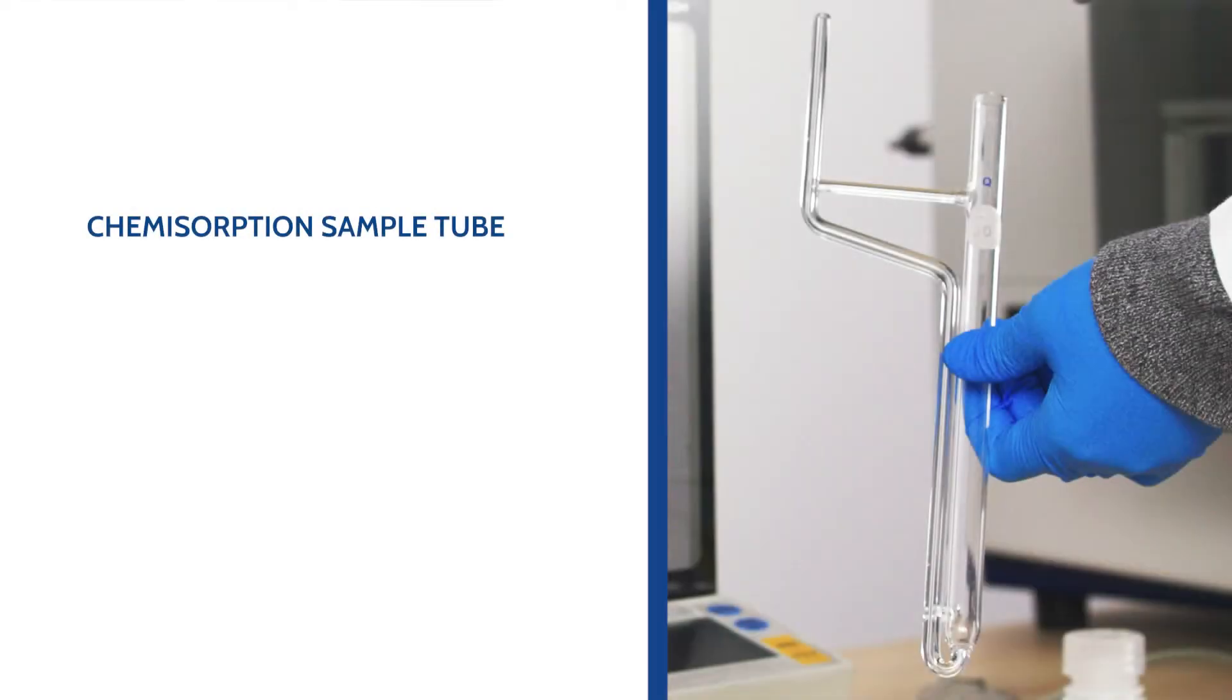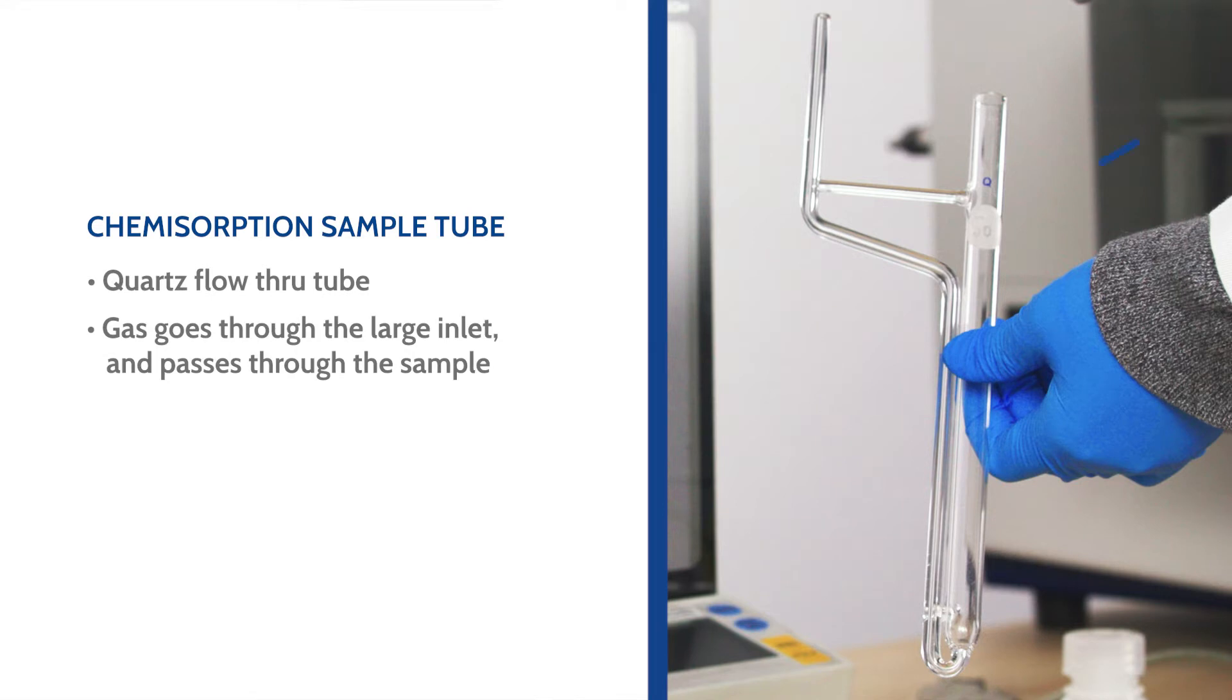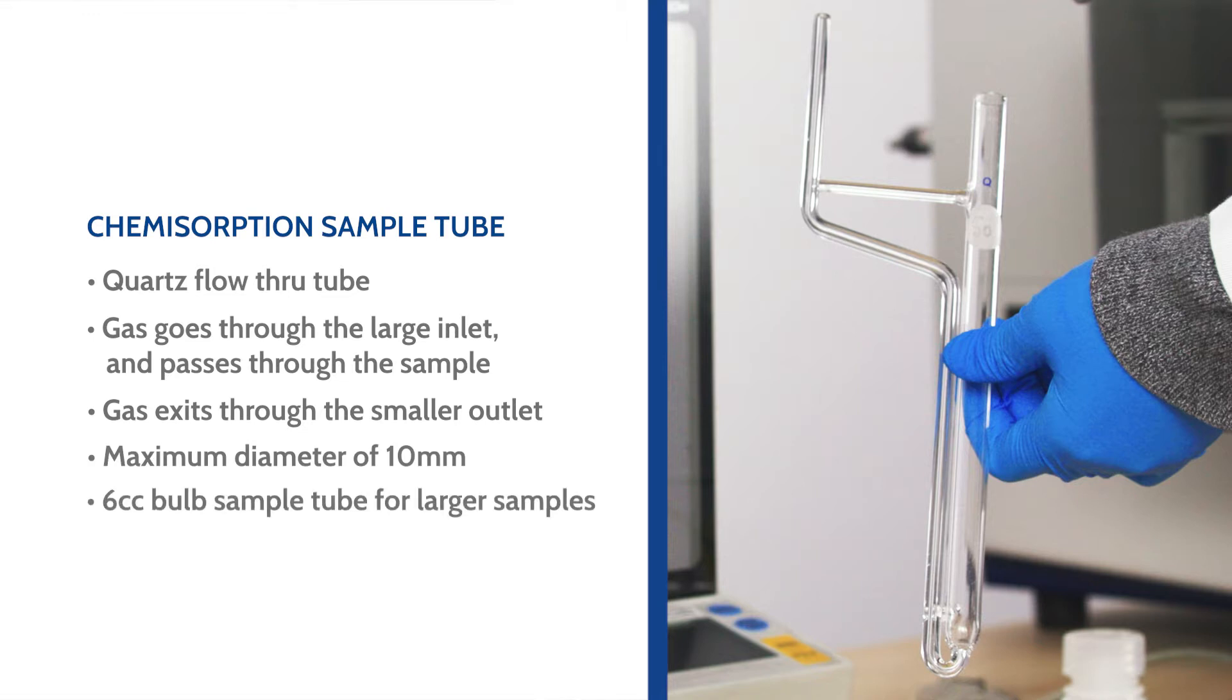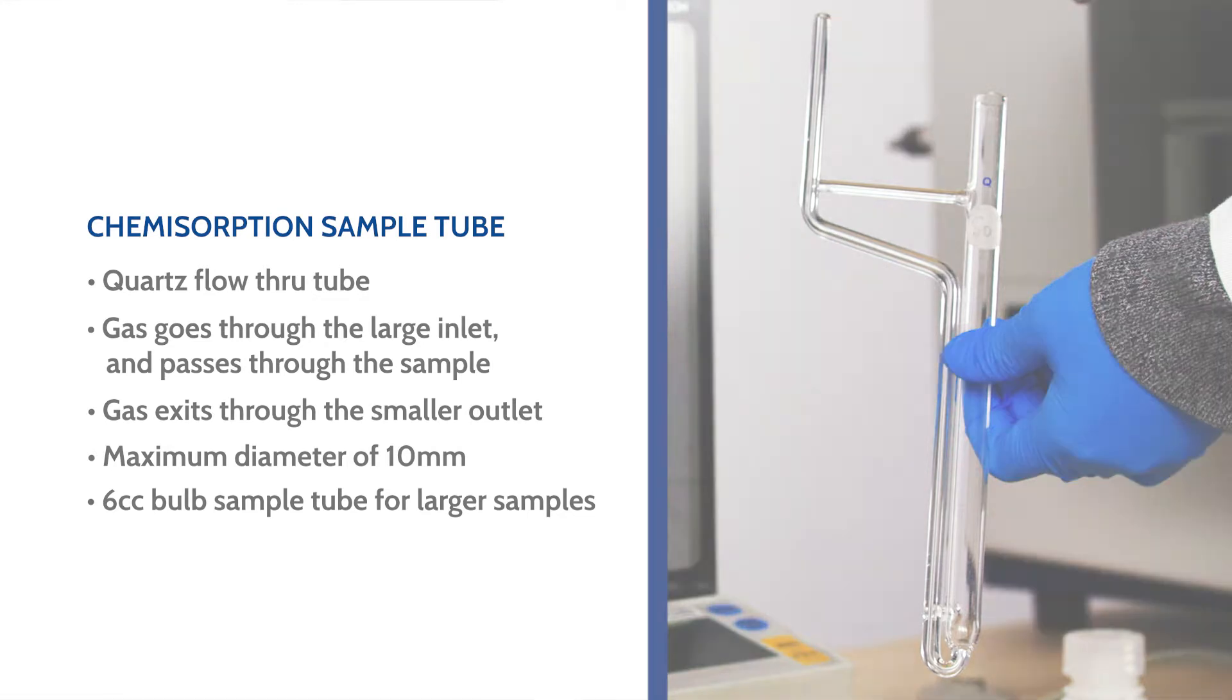The chemisorption sample tube for the 3FLEX is a quartz flow-through tube. The larger side is the inlet where the gas is introduced, passes through the sample and then exits through the smaller outlet. Samples are limited to a maximum diameter of 10 millimeters. A 6cc bulb sample tube is also available to accommodate a larger sample mass.